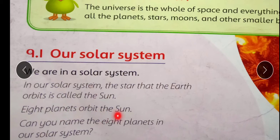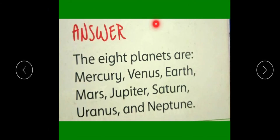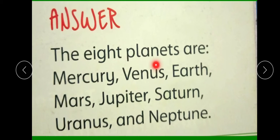Eight planets orbit the sun. Aath siyare, sooraj ke gird ghoomte hain. Can you name the eight planets in our solar system? Ki aap hamare solar system mein, eight jo planets hain, uske name bata sakte hain? Name them. The eight planets are, eight jo planets hain, ye siyare wo ye hain.